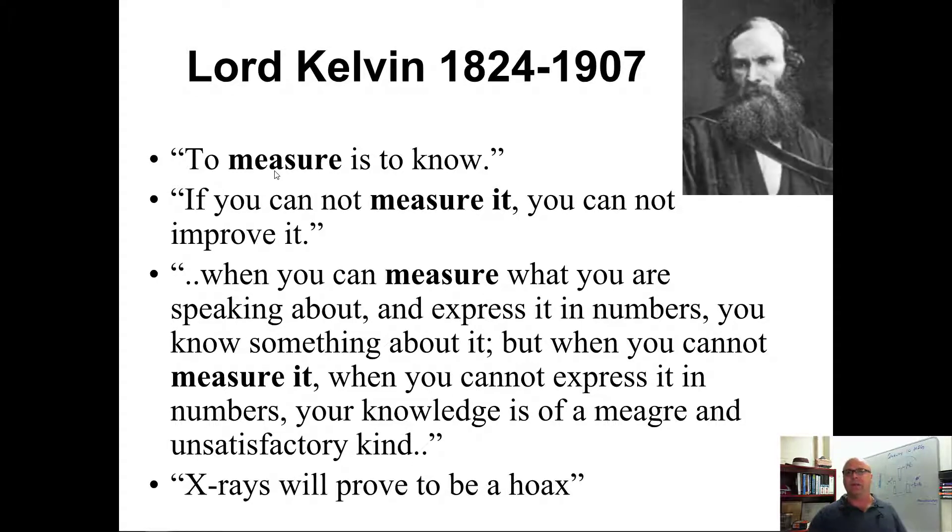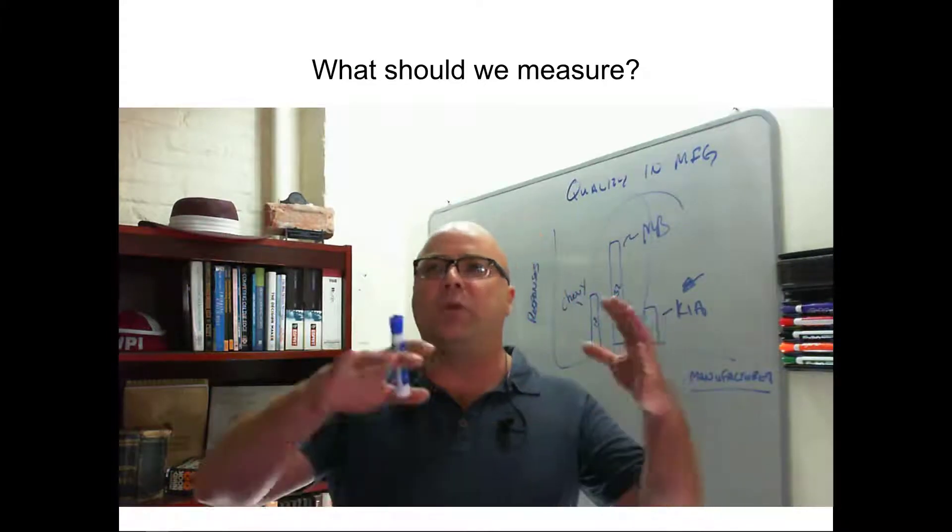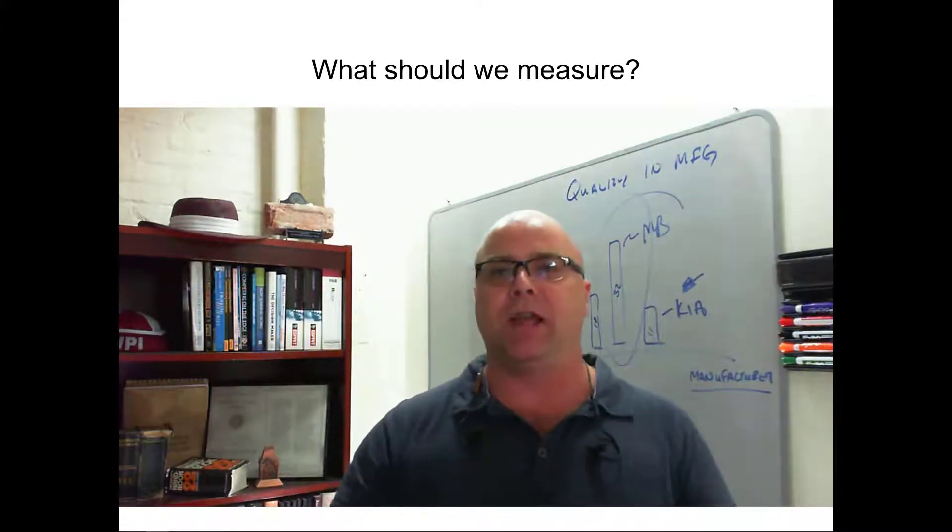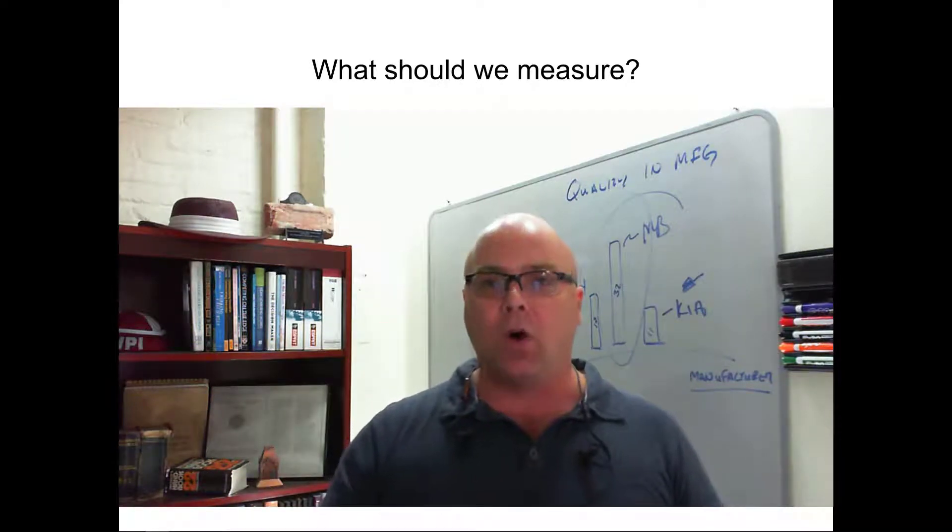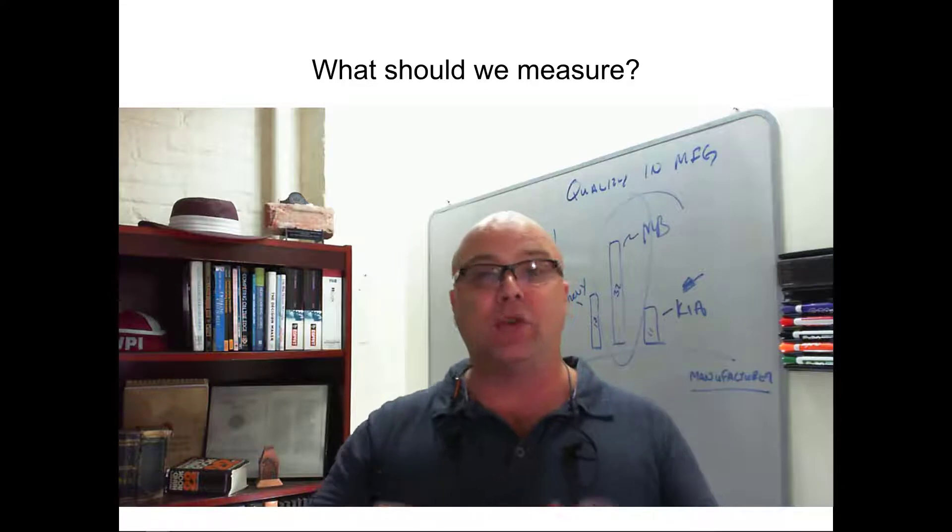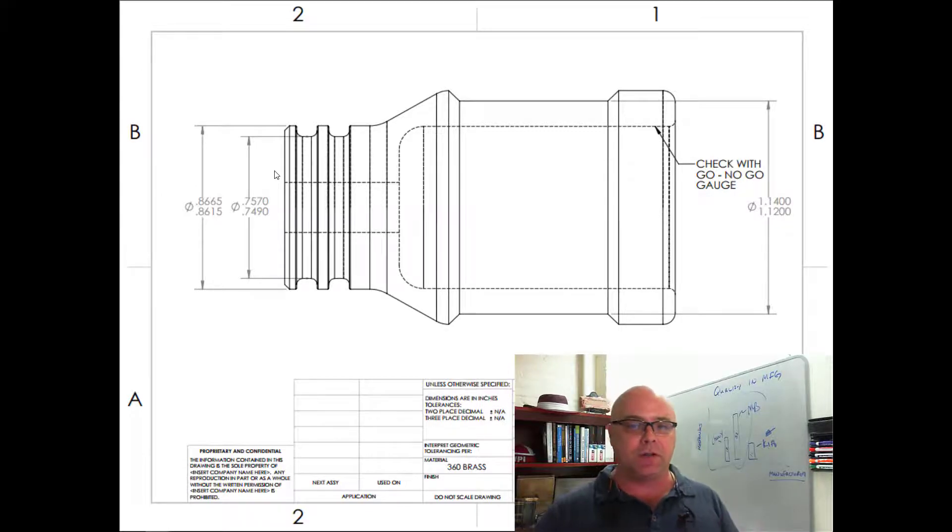And when we want to understand if we have quality, we need to have some specifications. The customer needs to have told us what they want or we need to have figured out what it is that the customer wants. And so in this case, I've got a specification. I've got a drawing. We're looking at just one part of the quality of this part in the next step here. But you can see this drawing, there's actually several functional parts on this drawing here.